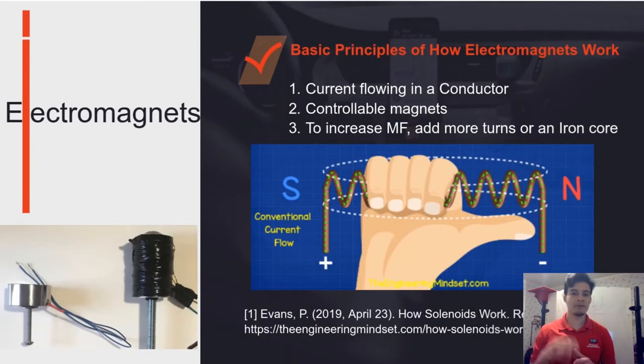Some of the basic principles of how electromagnets work is that electromagnets are made by applying a current through a conductor. This creates a magnetic field, and this magnetic field can increase by adding more turns to the coil or just adding a bolt. These devices are used on motors, generators, and many other electromechanical systems.